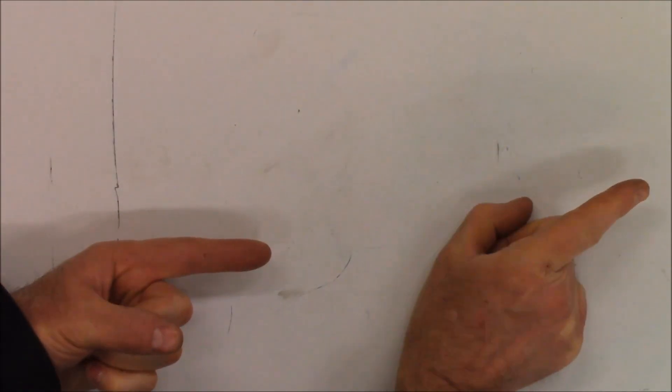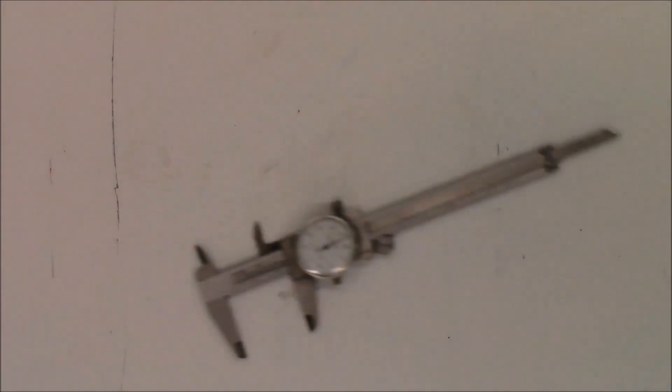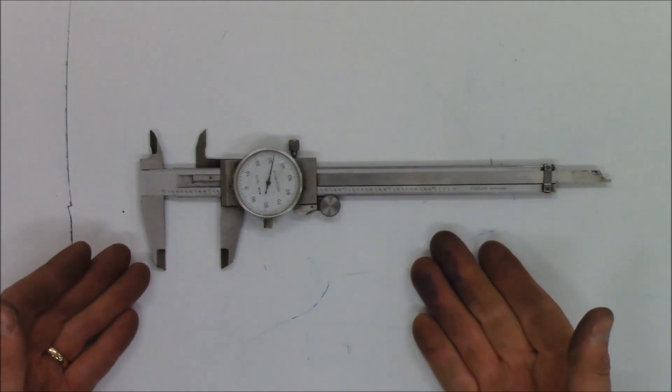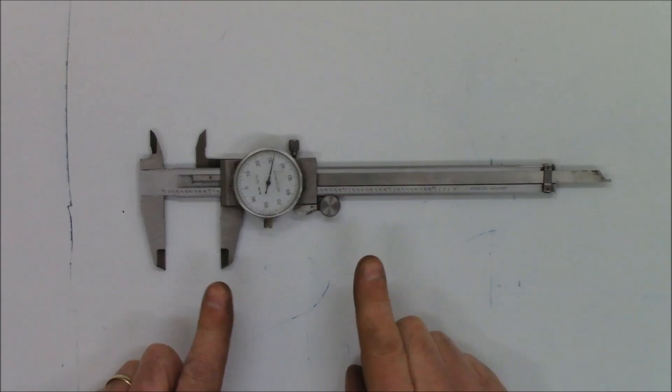Look over there! It can measure outside, it can measure inside—it's the dial caliper. The dial caliper measures in inches, decimals of an inch to be precise. Dial calipers are one of my favorites.